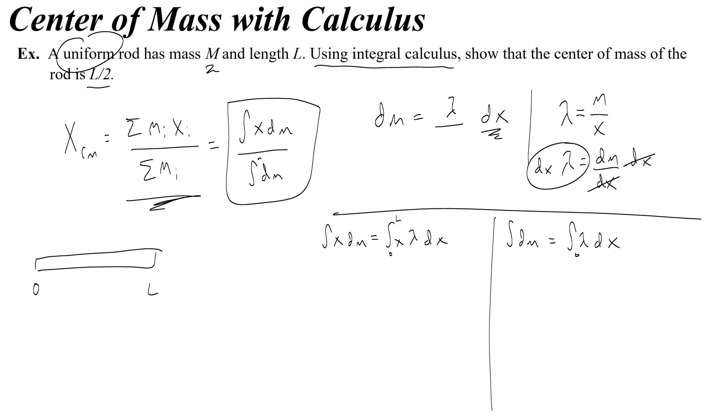For the bottom part of the fraction the integration is super easy because remember that lambda is uniform or constant, which means you get to take it outside of your integral. Calculus doesn't get done to constant things, and this is just going to give you lambda x from 0 to l, which means we're just going to replace x with l.